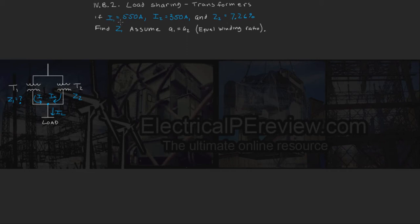So if I1 equals 550 amps, I2 equals 350 amps, and our impedance of transformer 2 equals 7.26%, find the impedance of transformer 1.